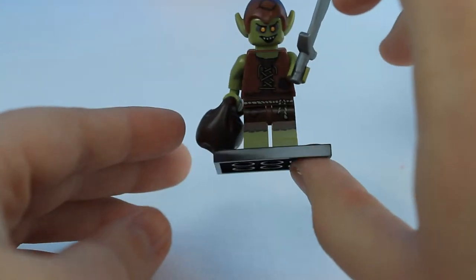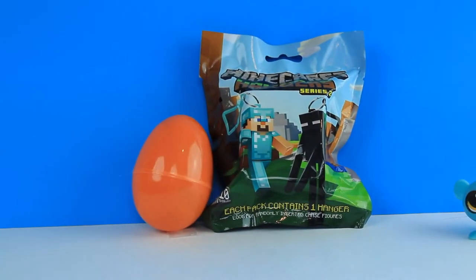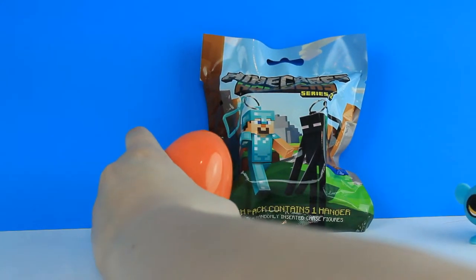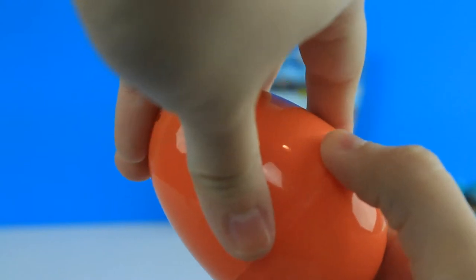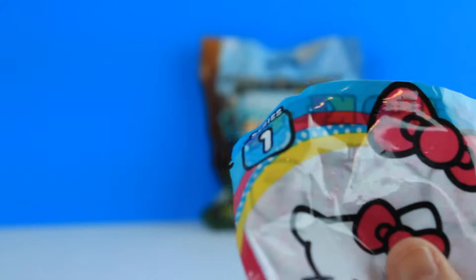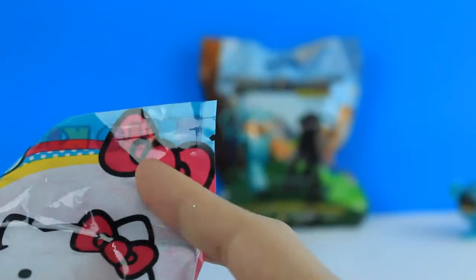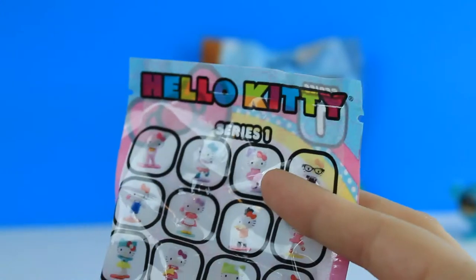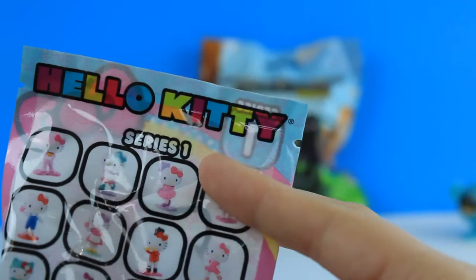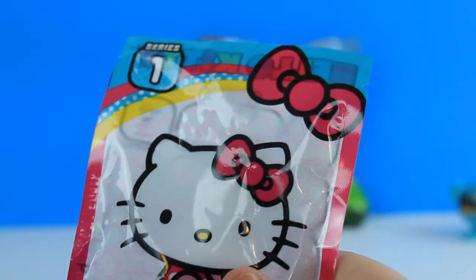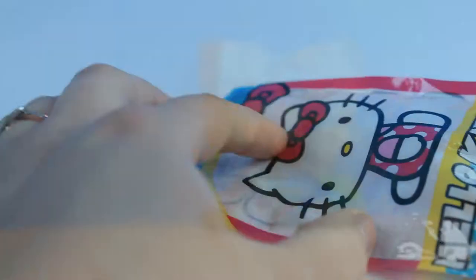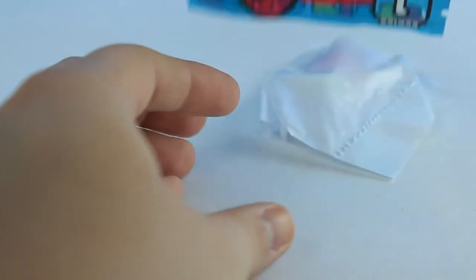So the next egg and the last egg is gonna be this orange egg right here. It doesn't make any noises so let's see what we got. And it's a Hello Kitty blind bag. Last time we got this ballerina one right here and it is series one. So let's get her open. There is thankfully a tear strip.